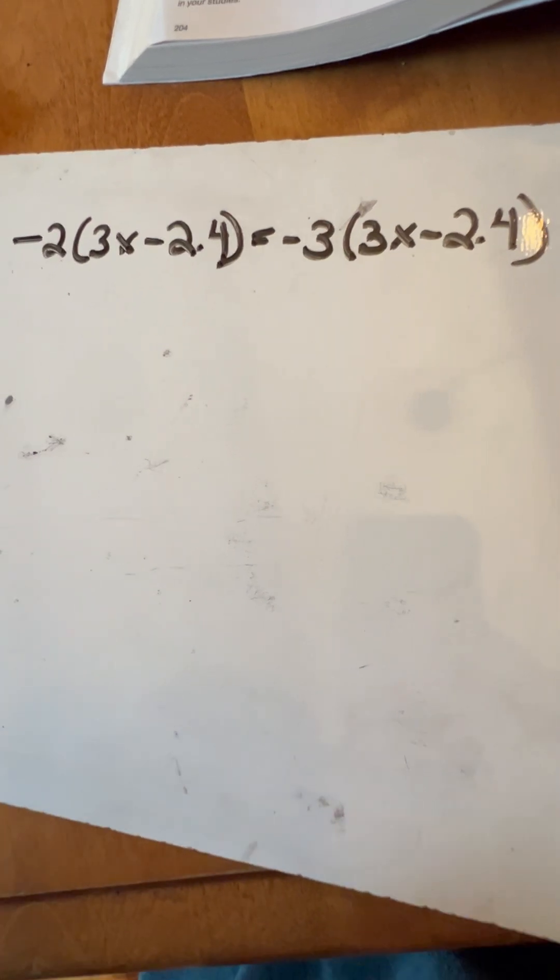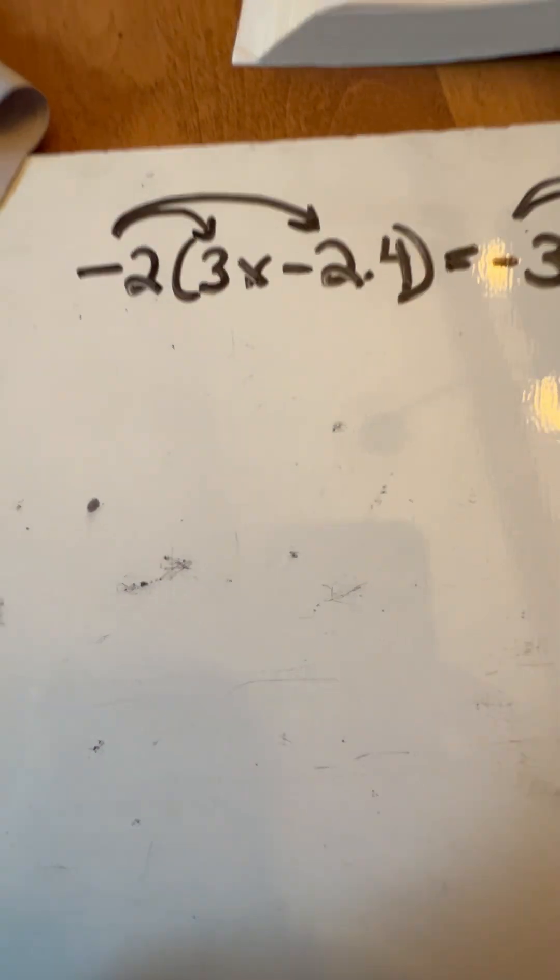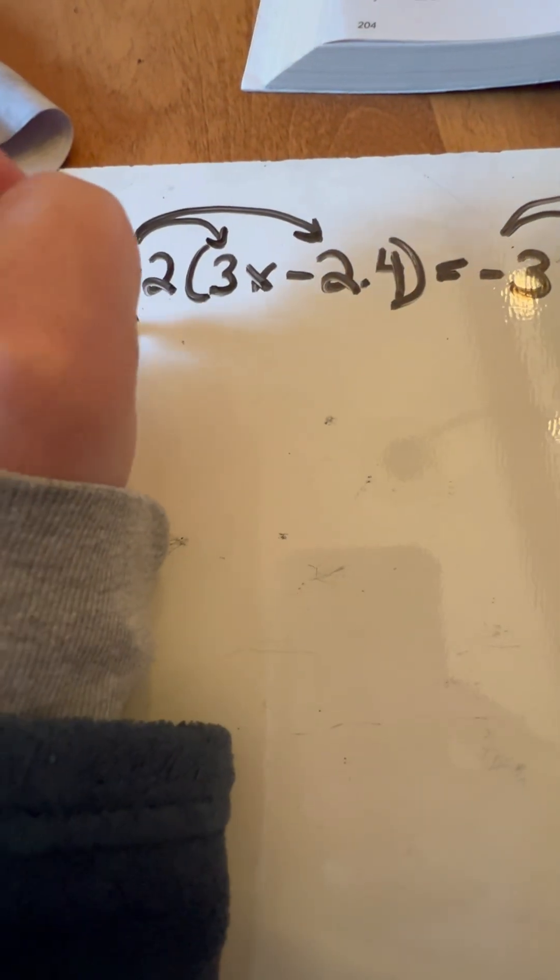So we are going to be looking at some distribution and solving for X. I am going to distribute that negative 2 here on both sides. We're also going to do that over here on both of these items as well. And so negative 2 times 3X is going to be negative 6X.